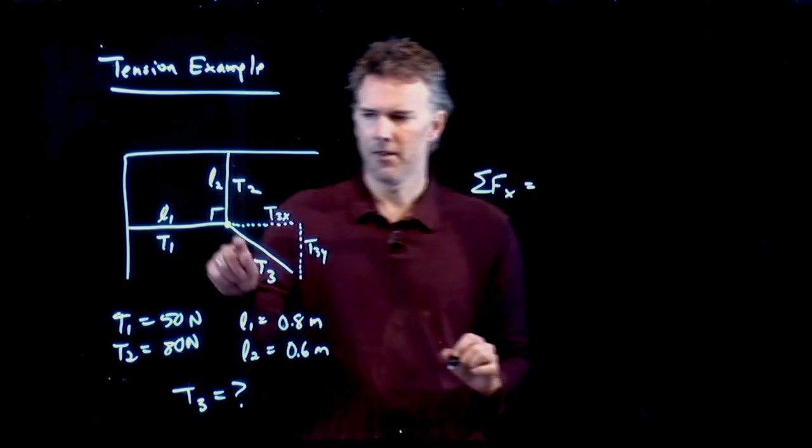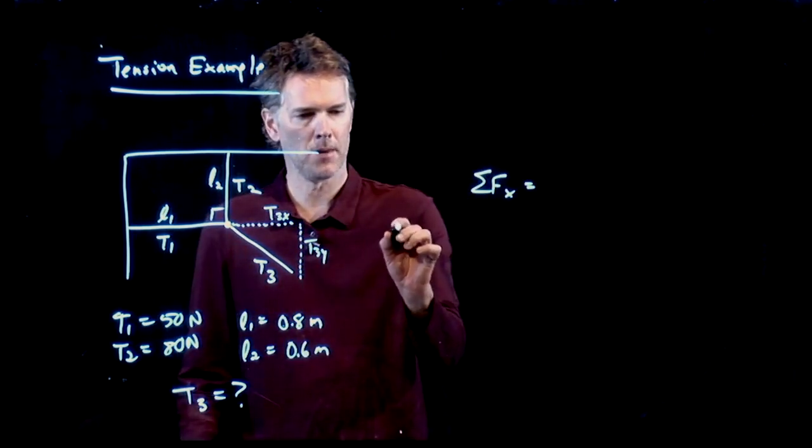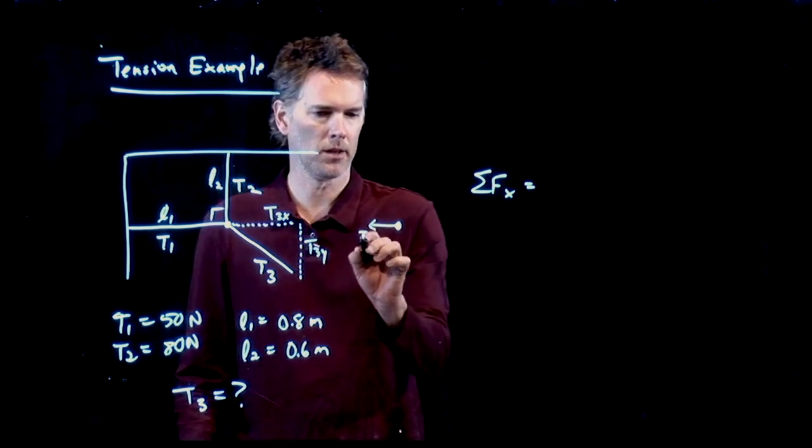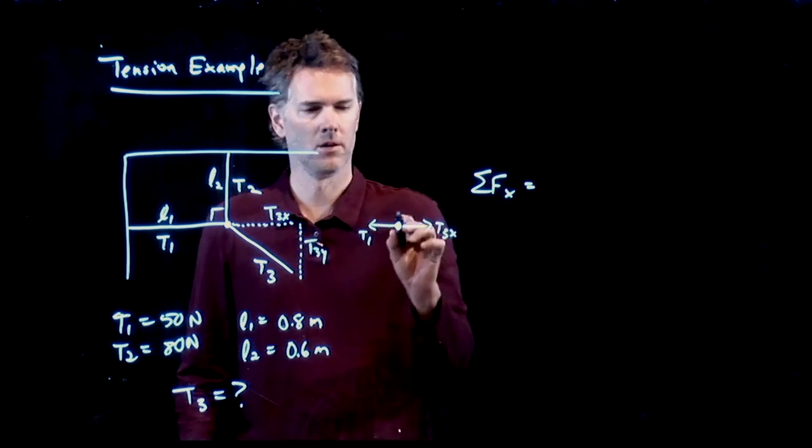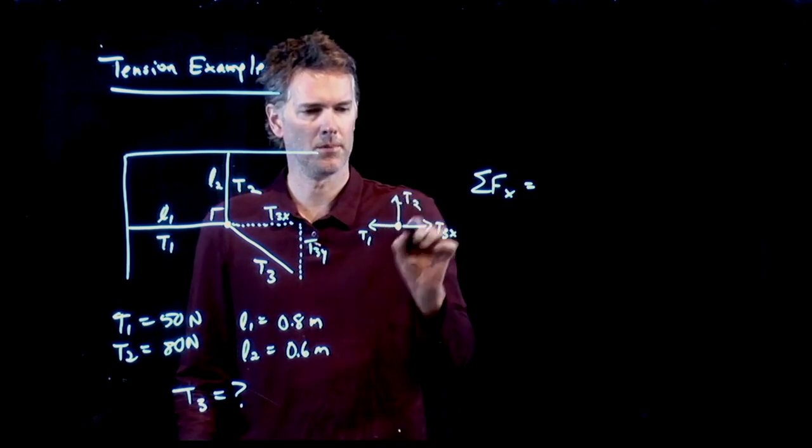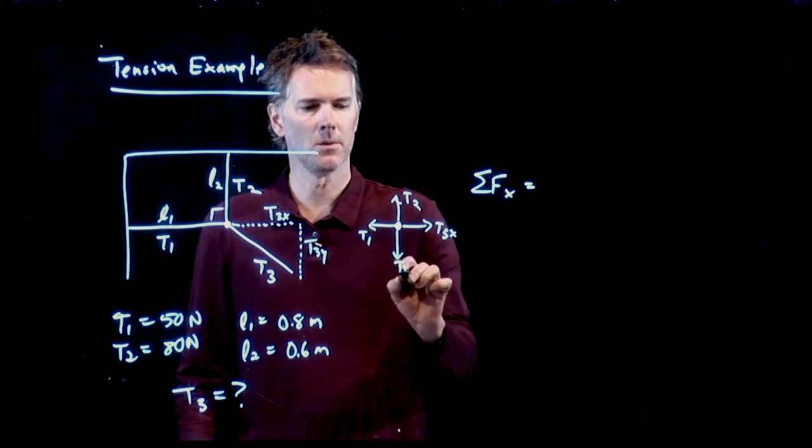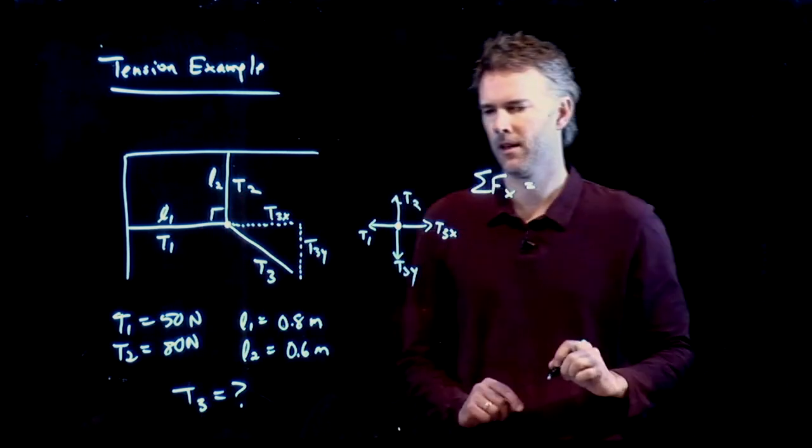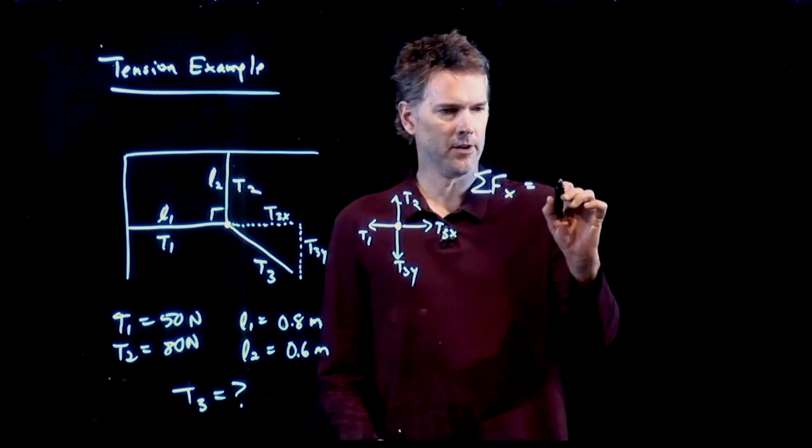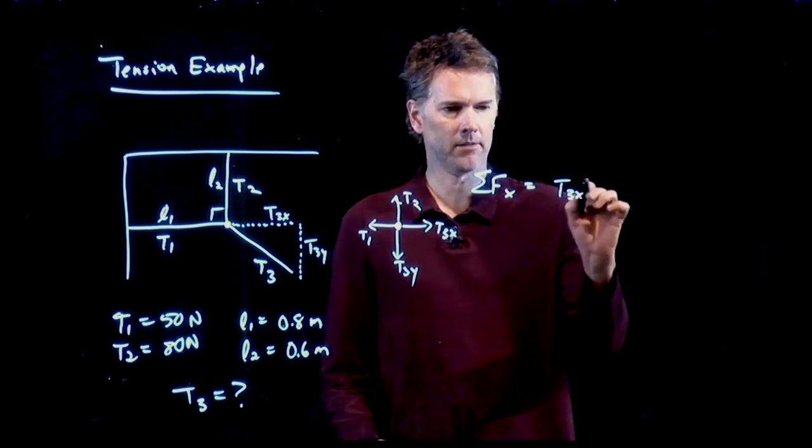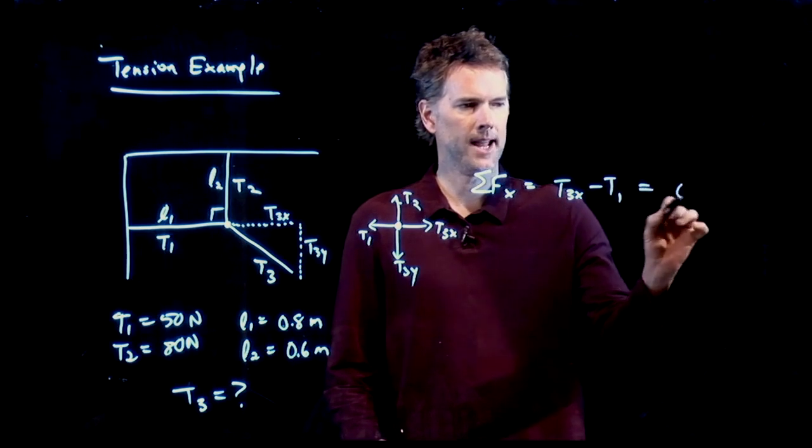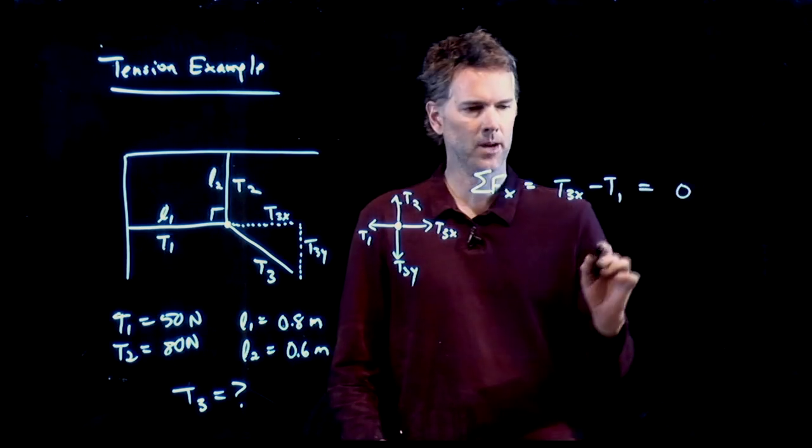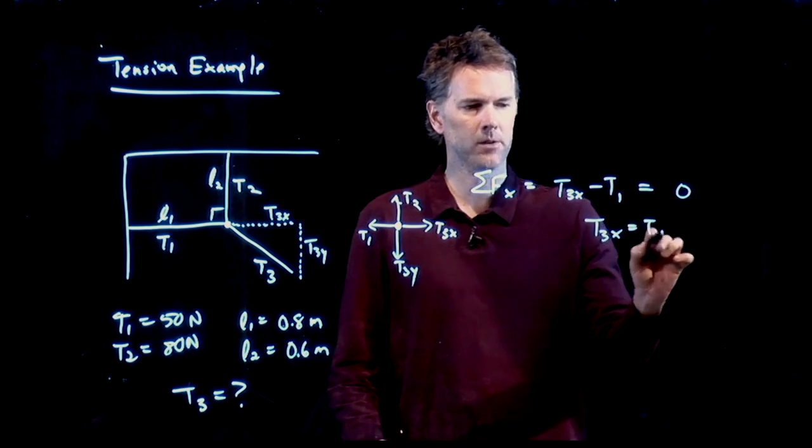If I think about the forces acting on my dot, I have T1 going that way, T3x going that way, T2 going up, T3y going down. This is actually very straightforward. T3x is going to the right, T1 is going to the left. That has to add up to zero if everything's at rest, so T3x is just T1.